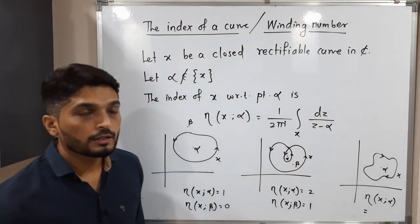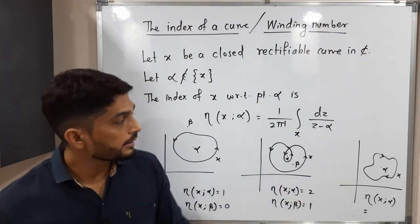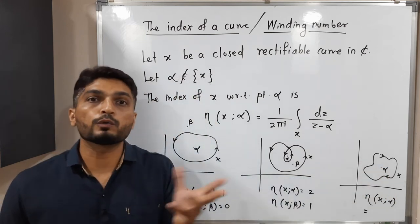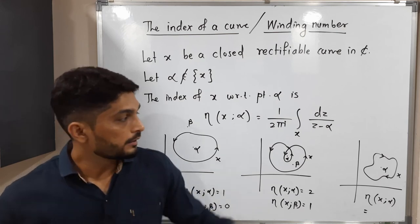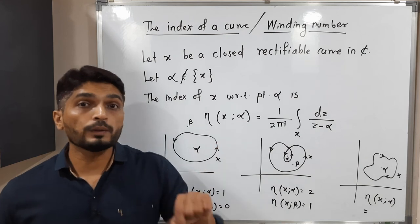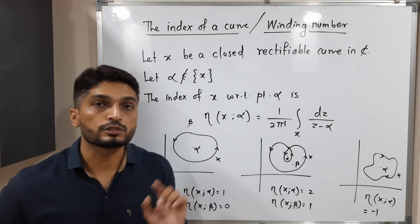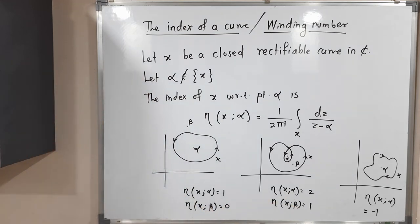Let us discuss the third example. In this third example, did you notice that x is in a clockwise direction? Actually we expect anti-clockwise direction, but we are having clockwise direction. X takes obviously one rotation around alpha but in a clockwise direction, so the winding value will be minus one since the direction is opposite. That's why I've written the minus sign there.